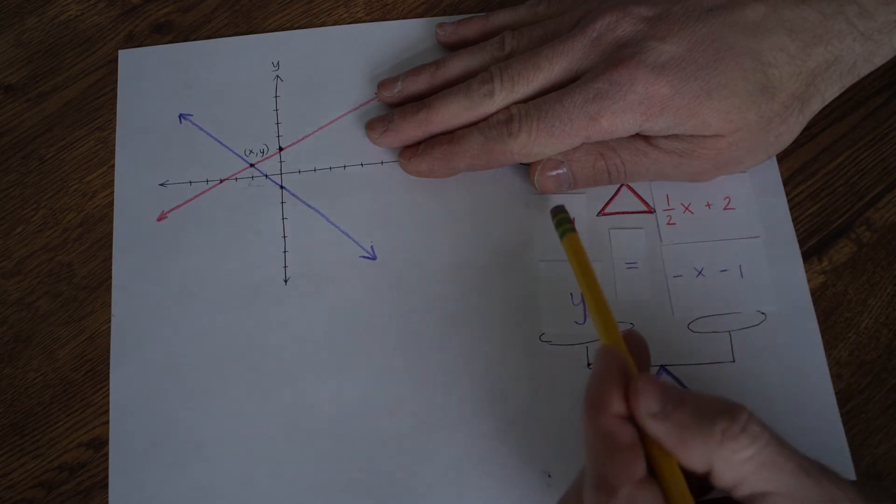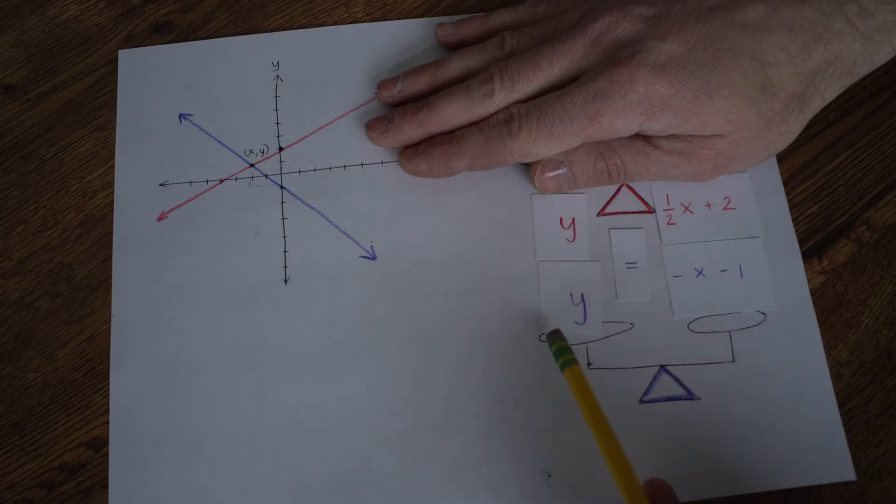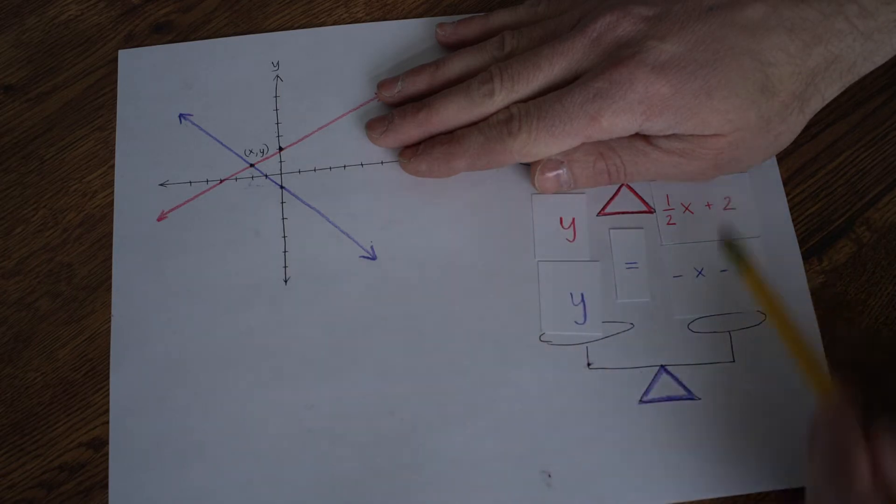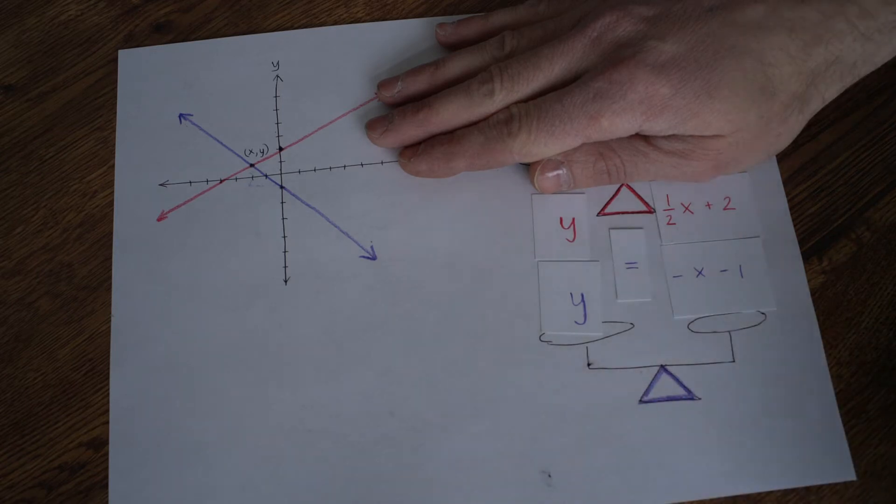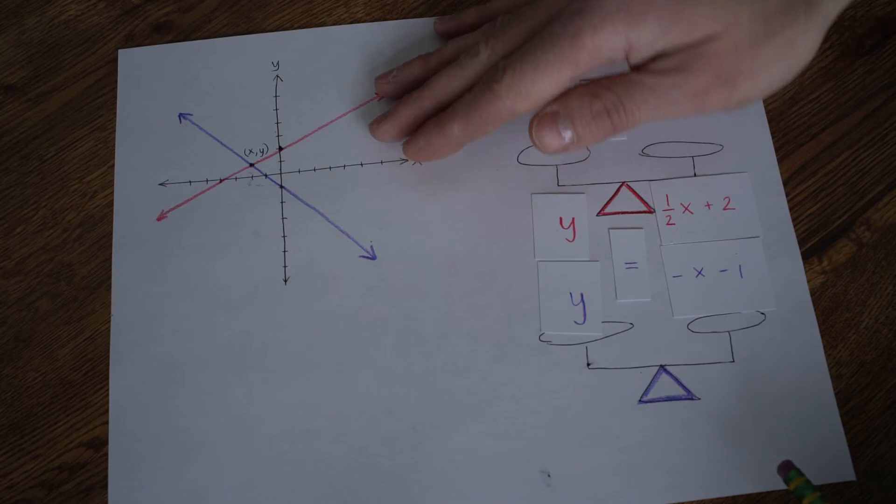And since these are both essentially 1's also, wouldn't this also weigh 2? So we have essentially doubled the scales here, because these are both equal to 1 and these are both equal to 1. So 2 equals 2. Is it a balanced scale? Well, yes it is.